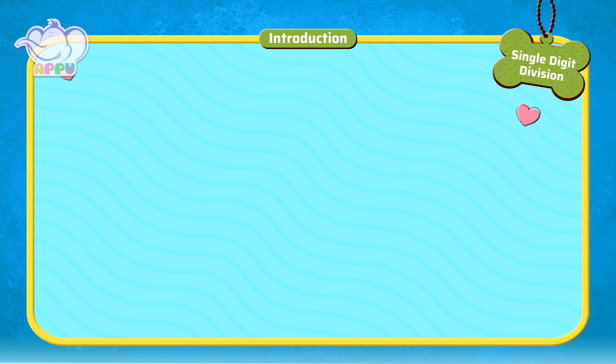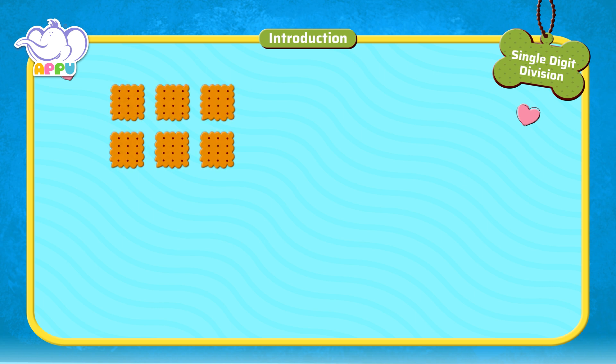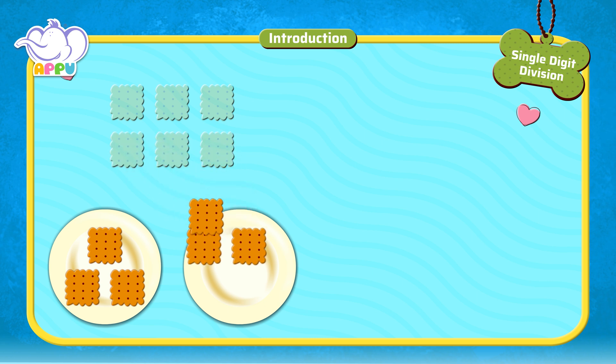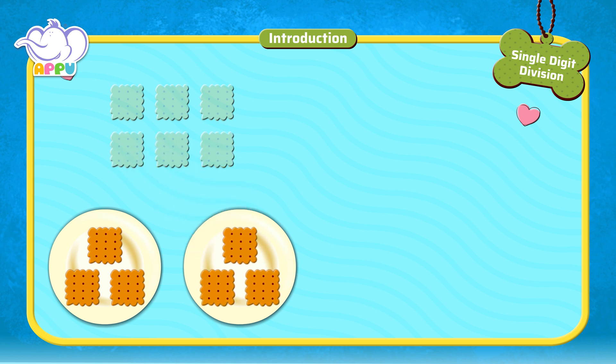We have learned earlier that division means breaking a number into equal number of parts. Divide 6 biscuits into 2 plates — we get 3 biscuits in each plate. Let's see how this is done using long division.